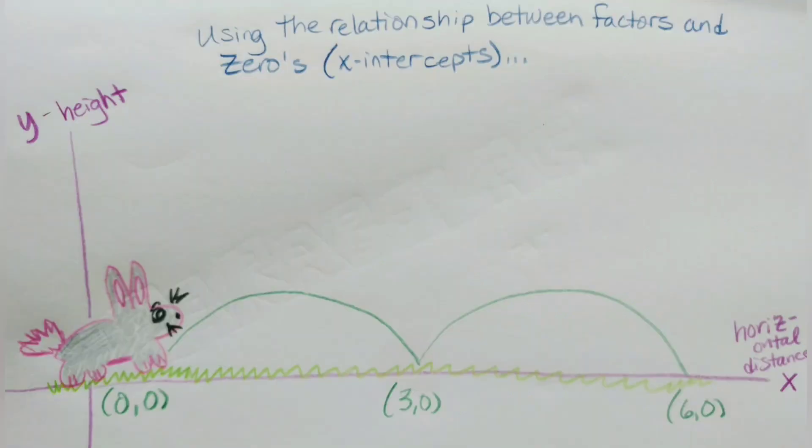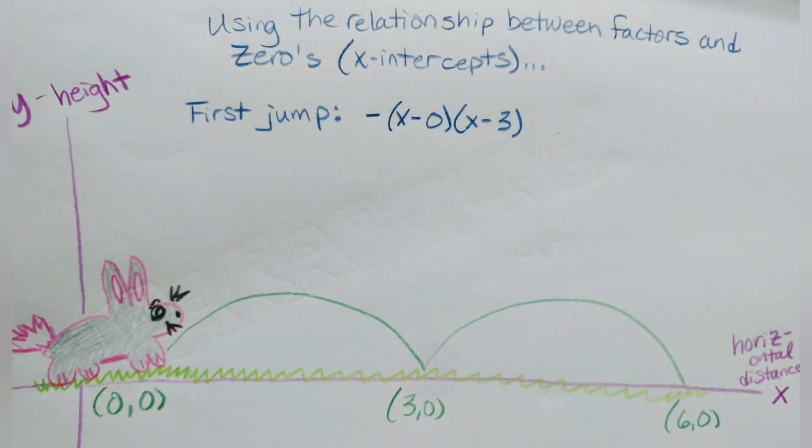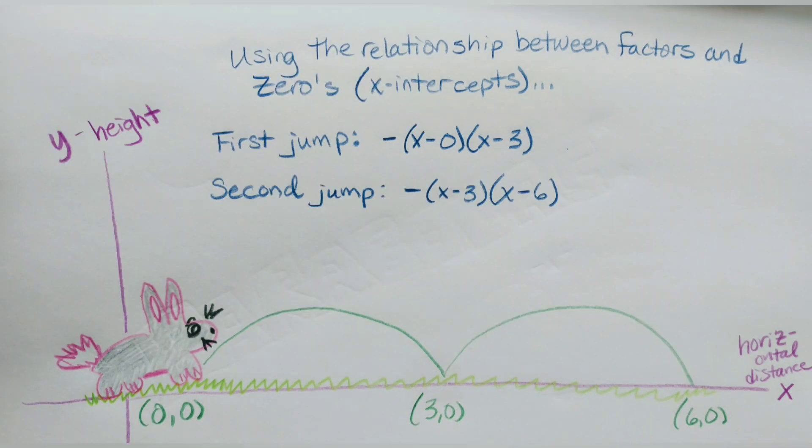Nico also remembered the relationship between factors and zeros. Since he knew the distance of each bunny hop, he knew the zeros. Now he could write the equation of each hop in factored form.